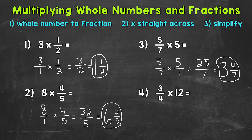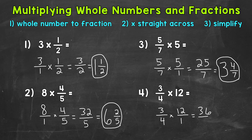And lastly, number four: we have three-fourths times 12. Rewrite the problem — three-fourths times 12 over one — and multiply straight across. Three times 12 is 36, and four times one is four, giving us the improper fraction 36 over four. Let's convert it to a mixed number: 36 divided by four hits 36 exactly, so there's no remainder. That means our final answer is a whole number. The final answer for number four is nine.